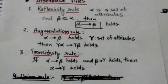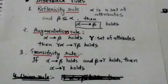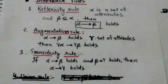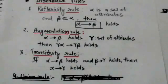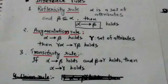The third rule is the transitivity rule. It states that if the functional dependency from alpha to beta holds and the functional dependency from beta to gamma also holds, then the functional dependency from alpha to gamma also holds.